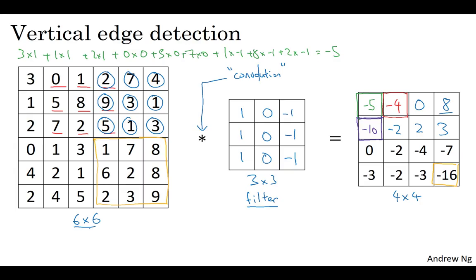So a six-by-six matrix convolved with a three-by-three matrix gives you a four-by-four matrix. These are images and filters — really just matrices of various dimensions. The matrix on the left is convenient to interpret as an image, the one in the middle we interpret as a filter, and the one on the right you can interpret as another image. And this turns out to be a vertical edge detector.